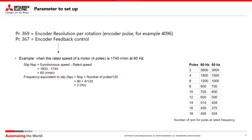The inverter parameters to be modified are parameter 369 and parameter 367. Parameter 369 indicates the encoder resolution for rotation — that is, the encoder pulses per revolution.